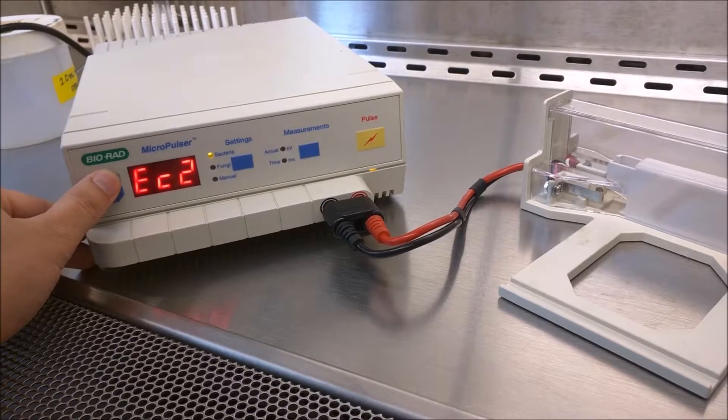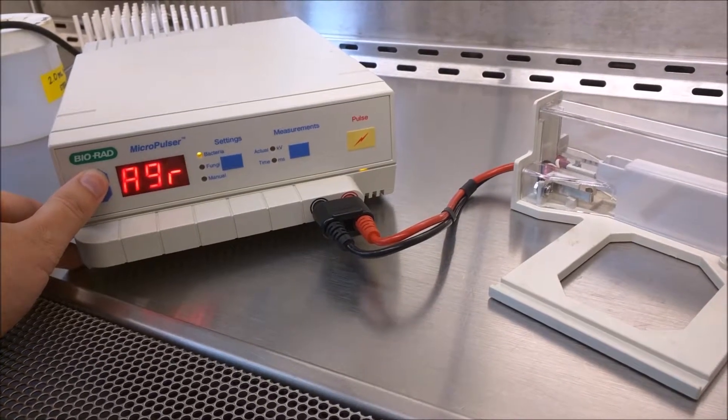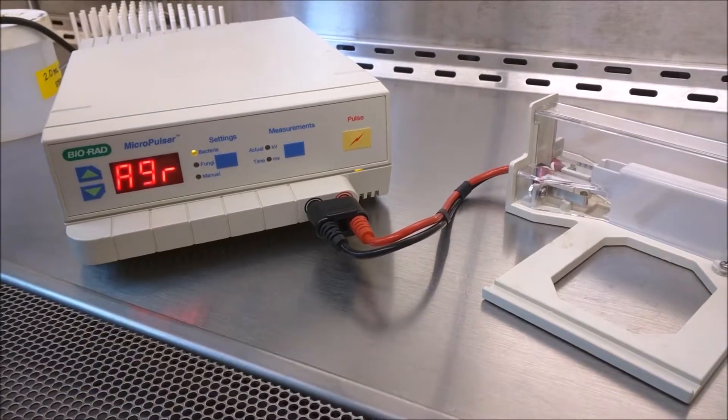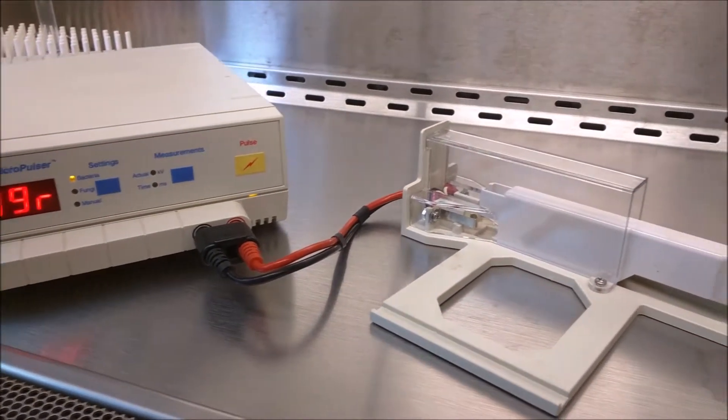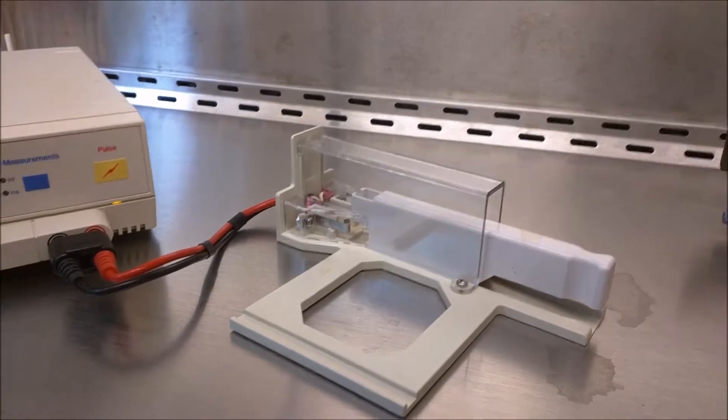First we need to insert our plasmid into Agrobacterium. This is a Bio-Rad electroporator. I'm setting it to Agro. This machine applies an electric field to Agrobacterium to increase the permeability of the cell membrane.